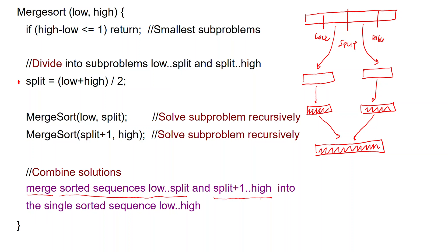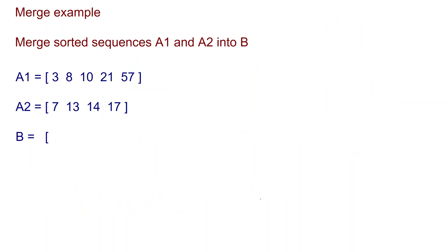Before giving the pseudocode for the merge operation, let us see an example. We merge sorted sequence A1 and sorted sequence A2 into the overall sorted sequence B. We keep three pointers starting at the first locations of the arrays, then iteratively compare the indexed locations in A1 and A2, writing the smaller value into B and updating the corresponding pointers. We compare 3 and 7: 3 is smaller, so we write 3, then move the pointer in B and the pointer in A1.